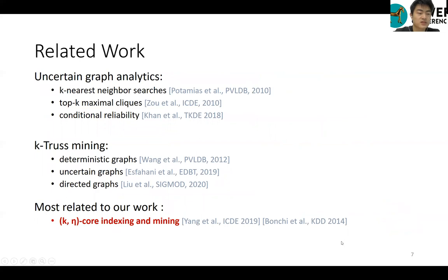In the literature, there are numerous kinds of uncertain graph analytic problems, including k-nearest neighbors, top-k maximum cliques, conditional reliability, and so on.